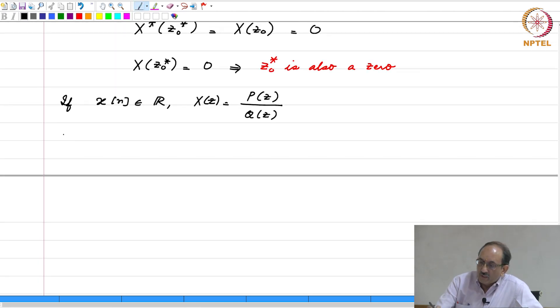And for the DTFT, the corresponding property is X of e to the j omega is the same as X star of e to the minus j omega. And, X of e to the j omega in general is a complex quantity as a function of omega. Therefore, this can be written as X_r of e to the j omega plus j times X_i of e to the j omega, where X_r and X_i are the real and imaginary parts of X of e to the j omega.